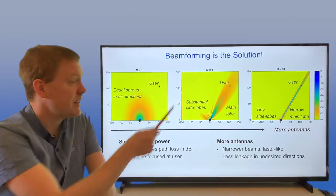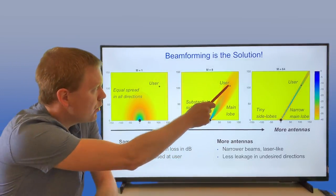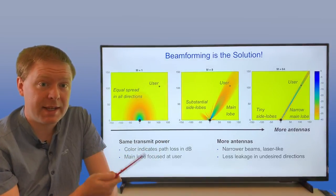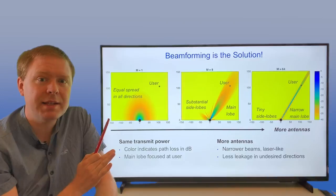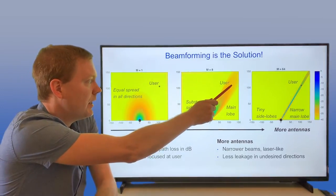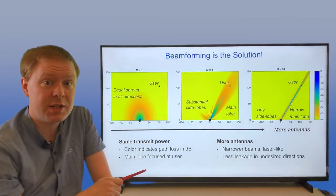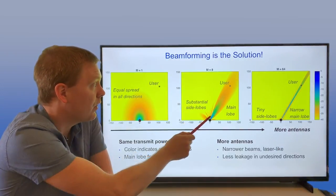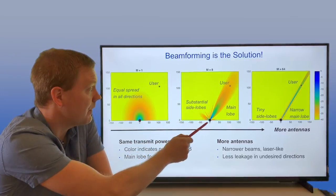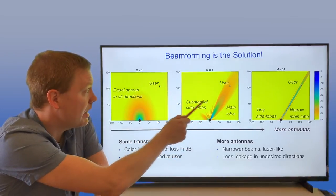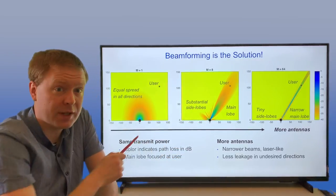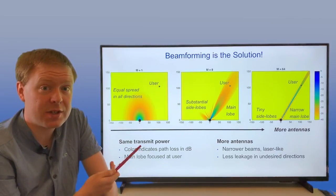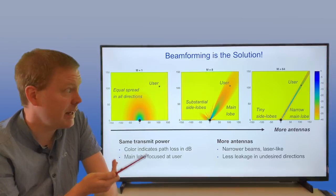As soon as you have, say, eight antennas and you transmit towards the user, you're taking the same signal and sending it from the eight antennas but with different time delays to get constructive interference at the location of the user. You're getting a stronger signal in that direction, also seen from the so-called main beam. There are some side lobes pointing in other directions where you also get some partial constructive interference.